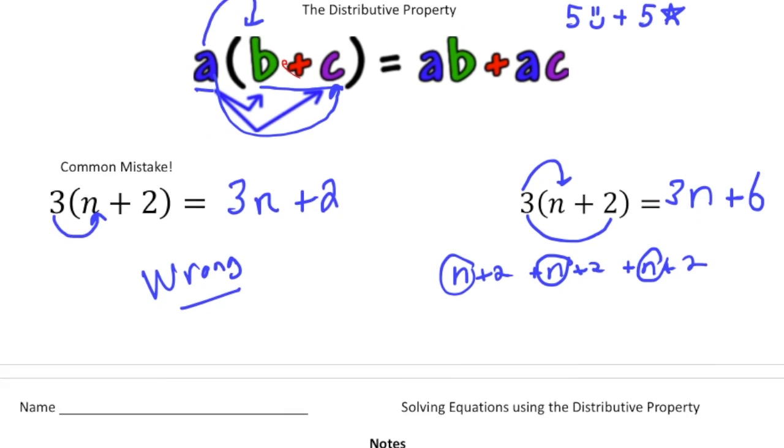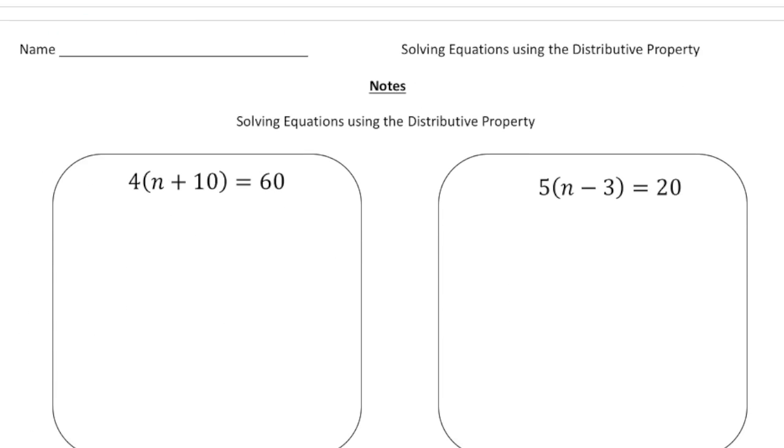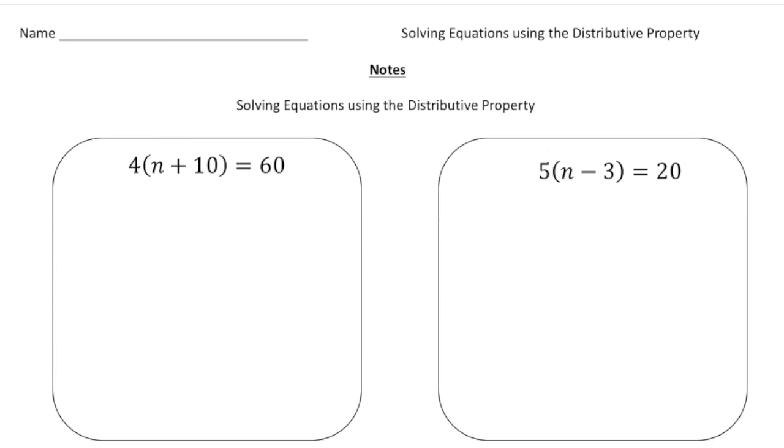If you turn the page, please. Now let's actually solve some problems that involve the distributive property. So the first one, we have four groups of n plus 10 equals 60. So first, we're going to distribute the four to both the n and the 10. So it's going to be four n plus 40 equals 60.